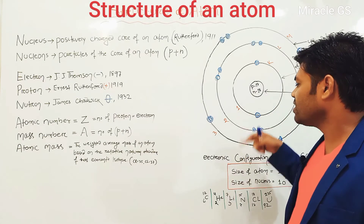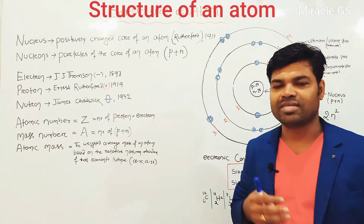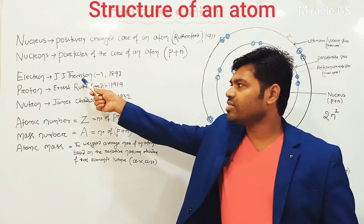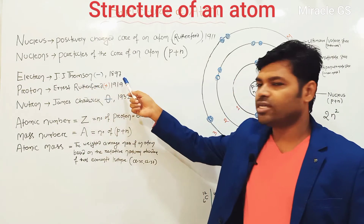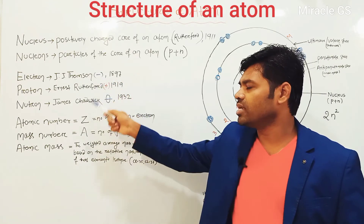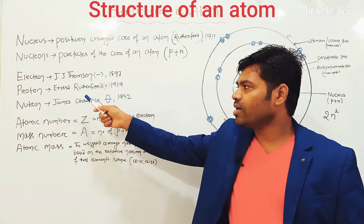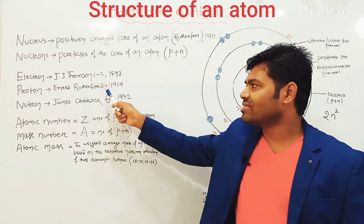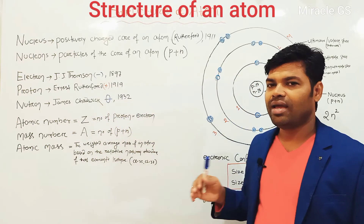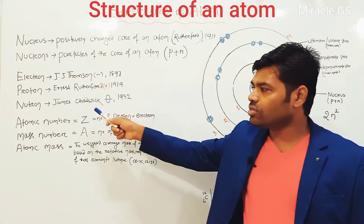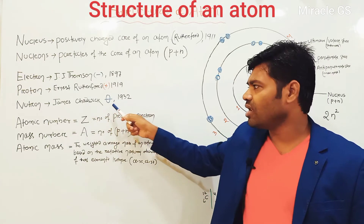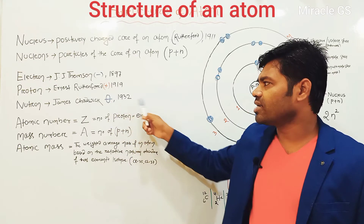The sub-atomic particles are electron, proton and neutron. Electron was discovered by J.J. Thomson in the year 1897 and its charge is negative. Proton was discovered by Ernest Rutherford in the year 1919 and its charge is positive. Neutron was discovered by James Chadwick and its charge is neutral — it was discovered in the year 1930.